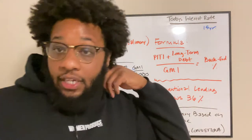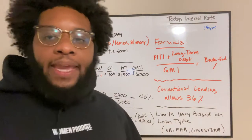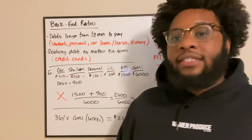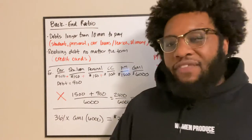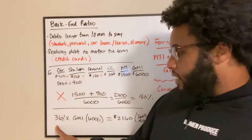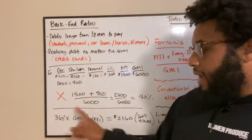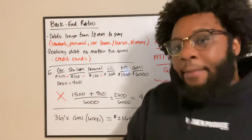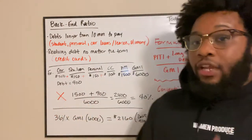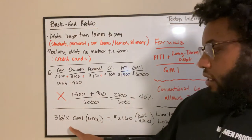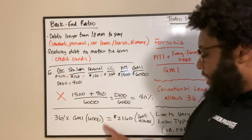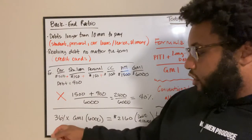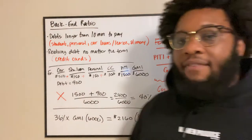To make things easier — how you can calculate it without using the full formula — if you know the back-end ratio of the loan type you're trying to get, ask yourself: do I qualify right now, or do I need to make some adjustments? Take that percentage — conventional allows 36% back-end — and multiply it by your total gross monthly income. 36% times $6,000 gives you $2,160. That means $2,160 is the maximum amount of debt you're allowed to carry monthly under conventional lending.